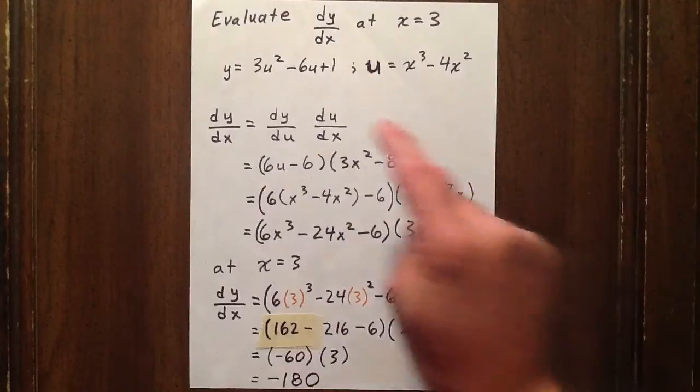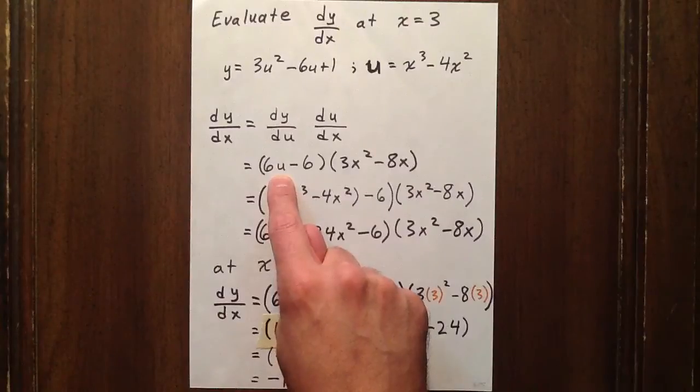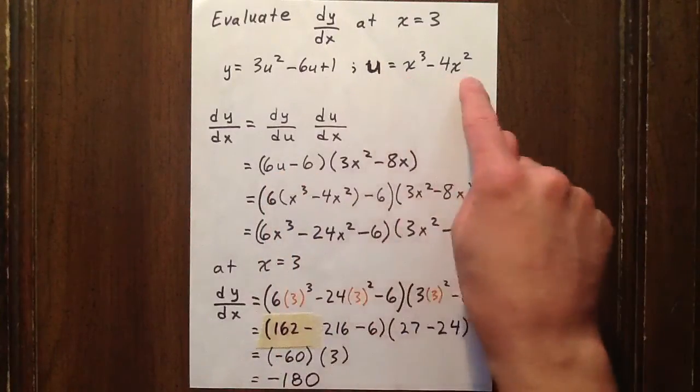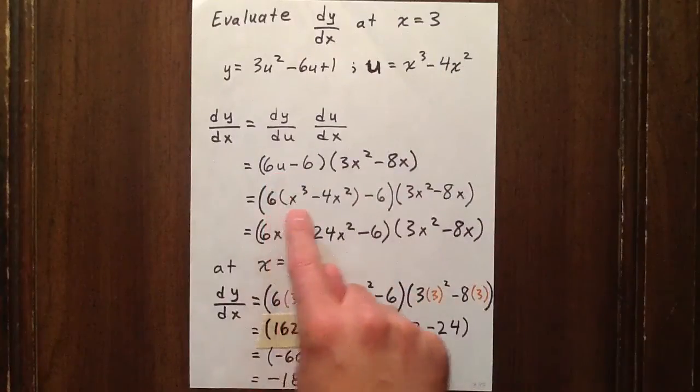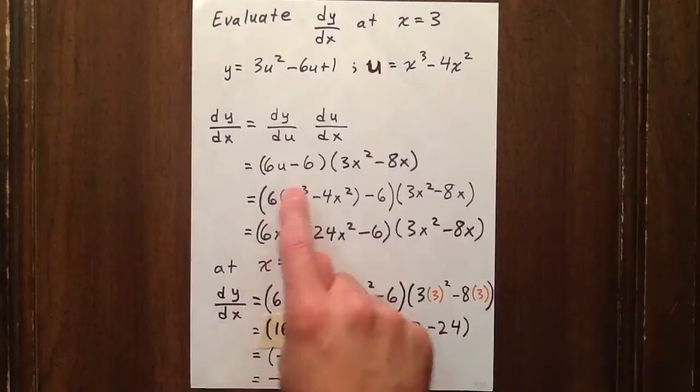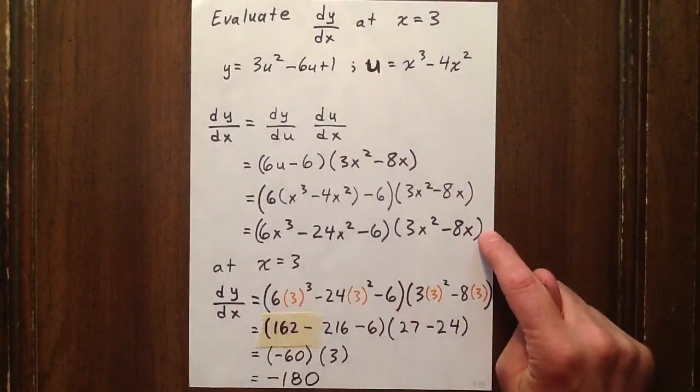Now, we should substitute x cubed minus 4x squared in for u, and we get this as our new expression. Now, the 6 can be distributed in here, of course, and we get this as our expression for dy/dx.